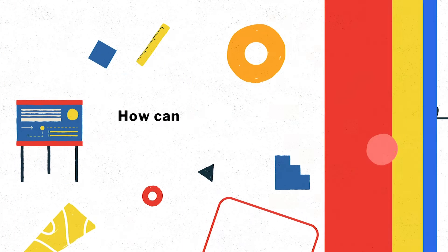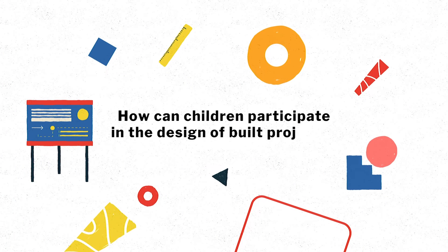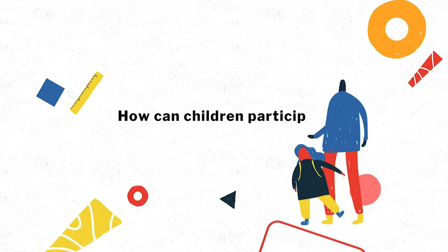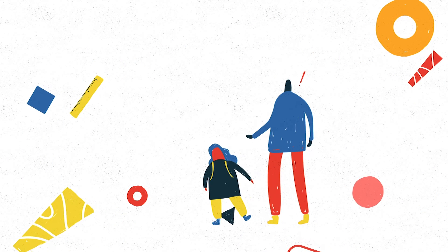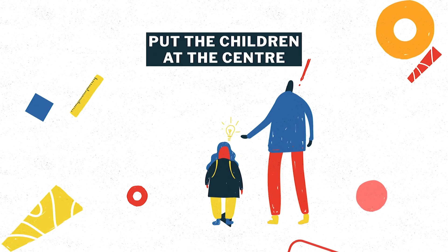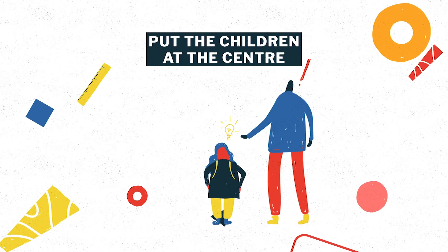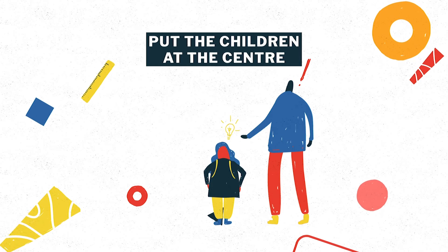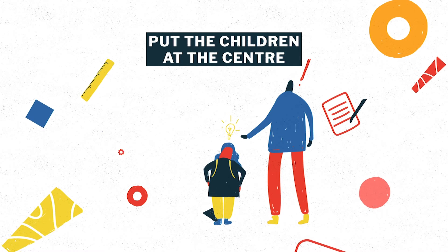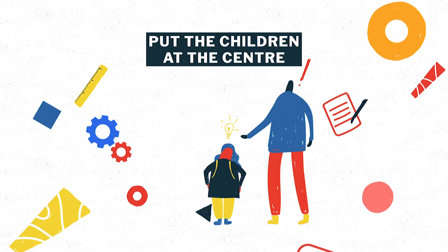How can children participate in the design of built projects? Through four simple steps. Step 1: Put children and their carers at the centre of developing ideas for the project. This requires strong partnerships that consider the specific needs of children affected by displacement.